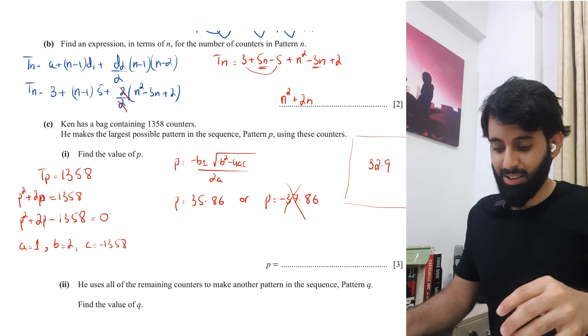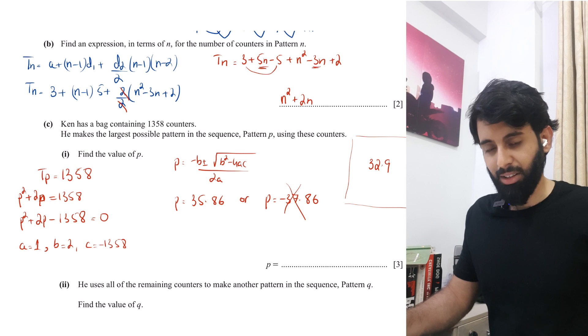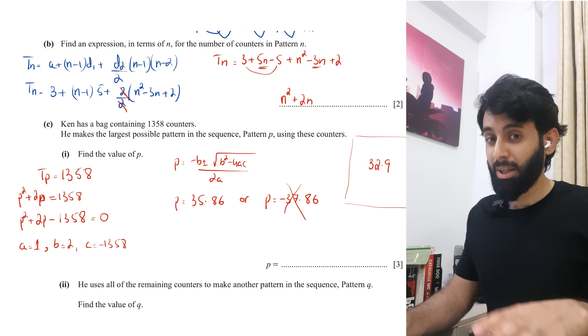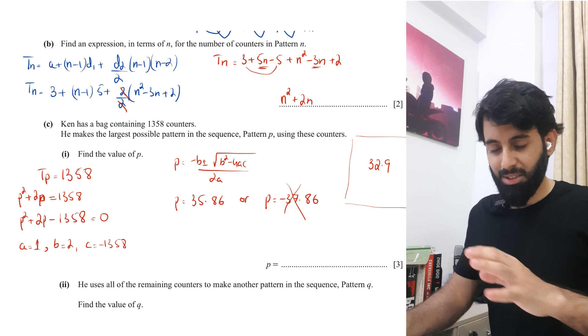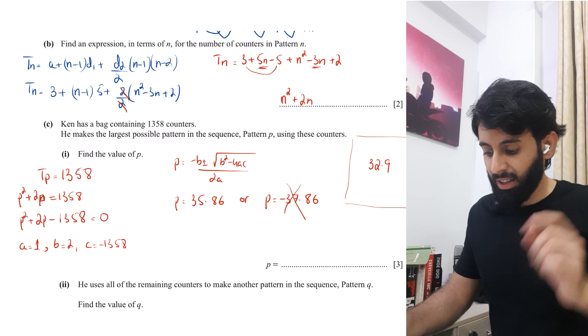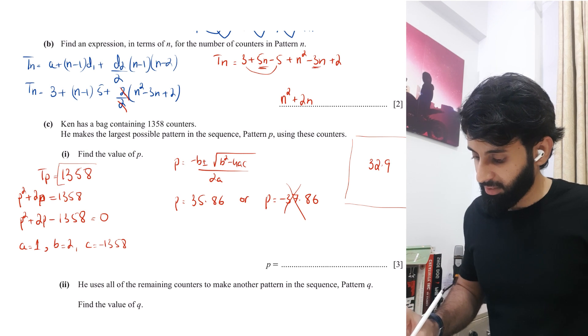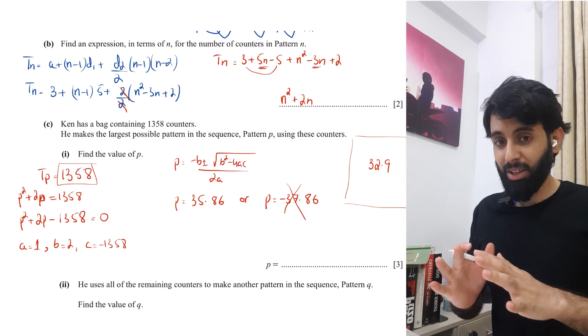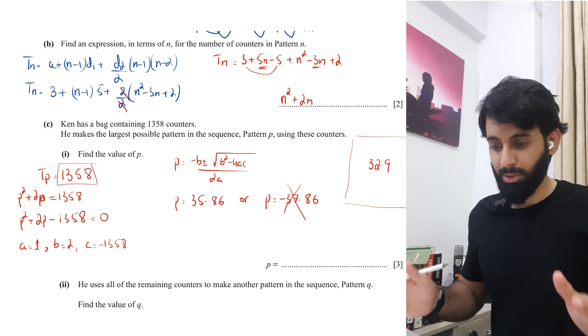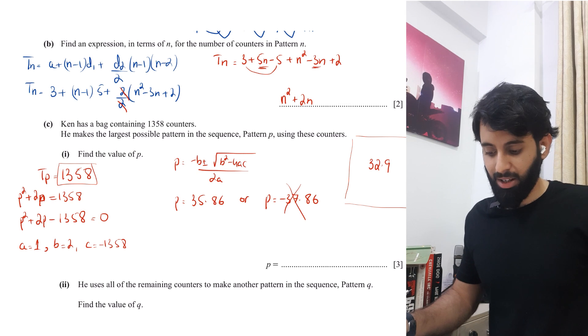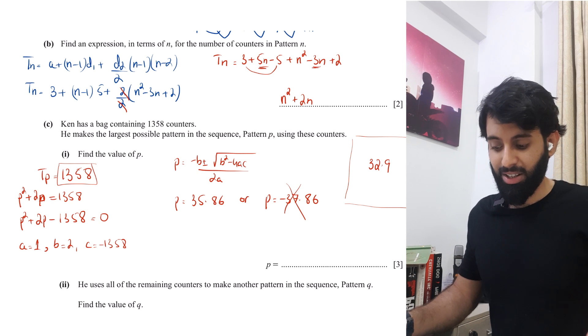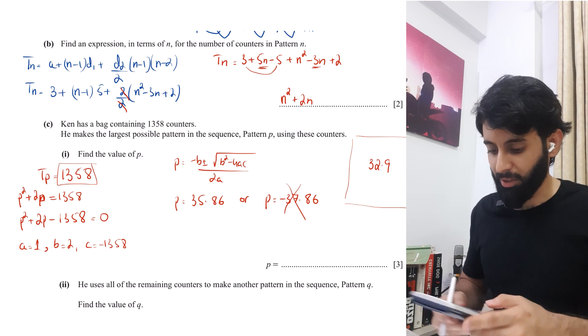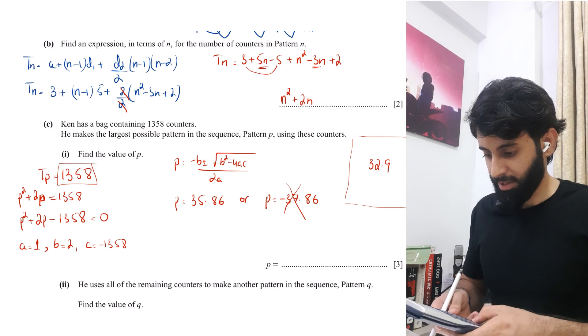Now, conventional thinking would say that, you know, 32.9 is very close to 33. So let's just make it 33, but that's not the case because at 32.9, the capacity is completely exhausted. So that means there's no room for that 0.1. Similarly, we have 1,358 counters at 35.86, the capacity is completely exhausted. That means we're going to be using all of the 1,358 counters to make pattern number 35.86.